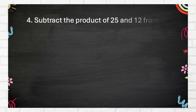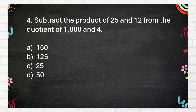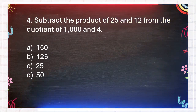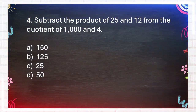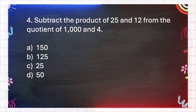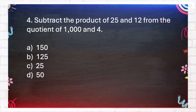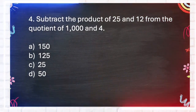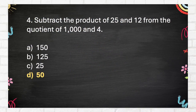Question number 4. Subtract the product of 25 and 12 from the quotient of 1,000 and 4. A. 150, B. 125, C. 25, D. 50. The answer is D. 50.